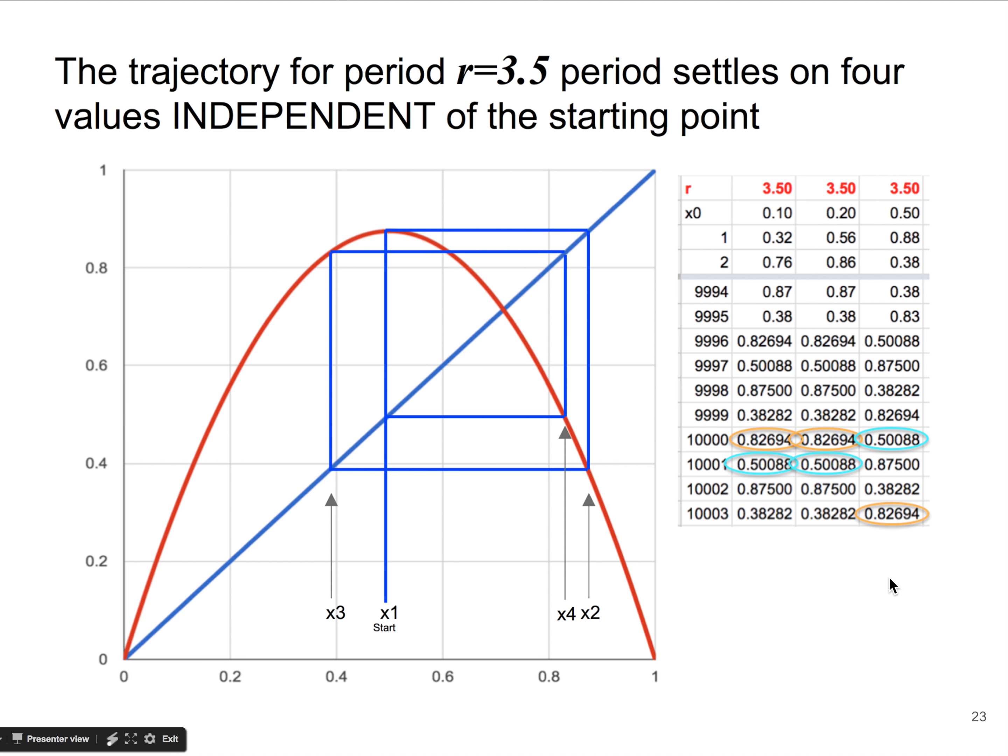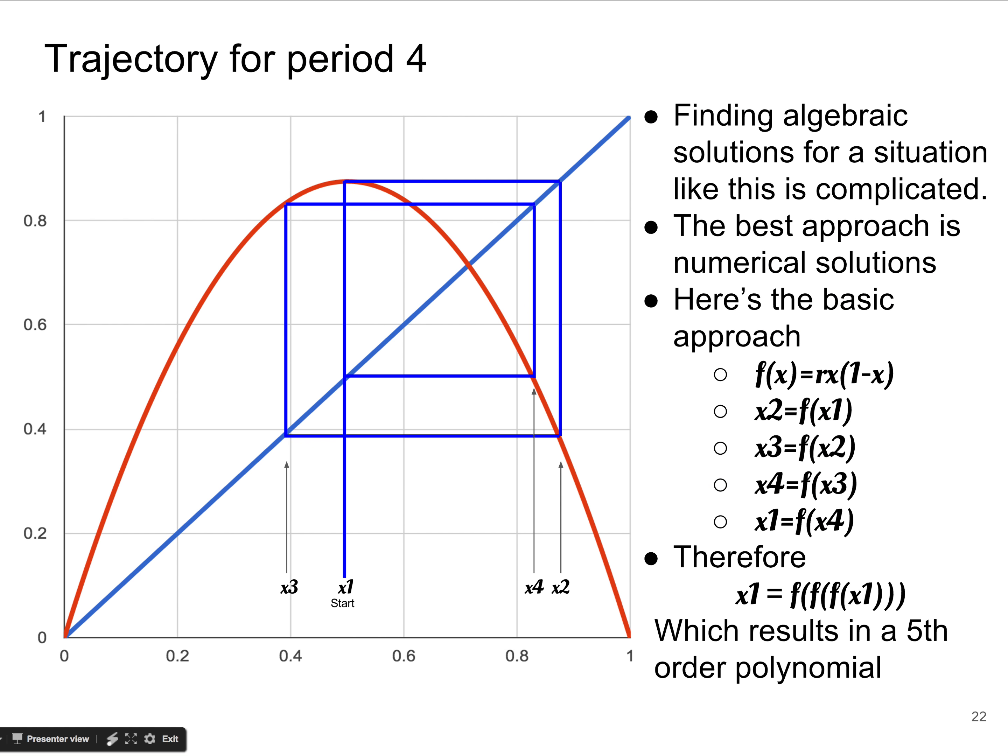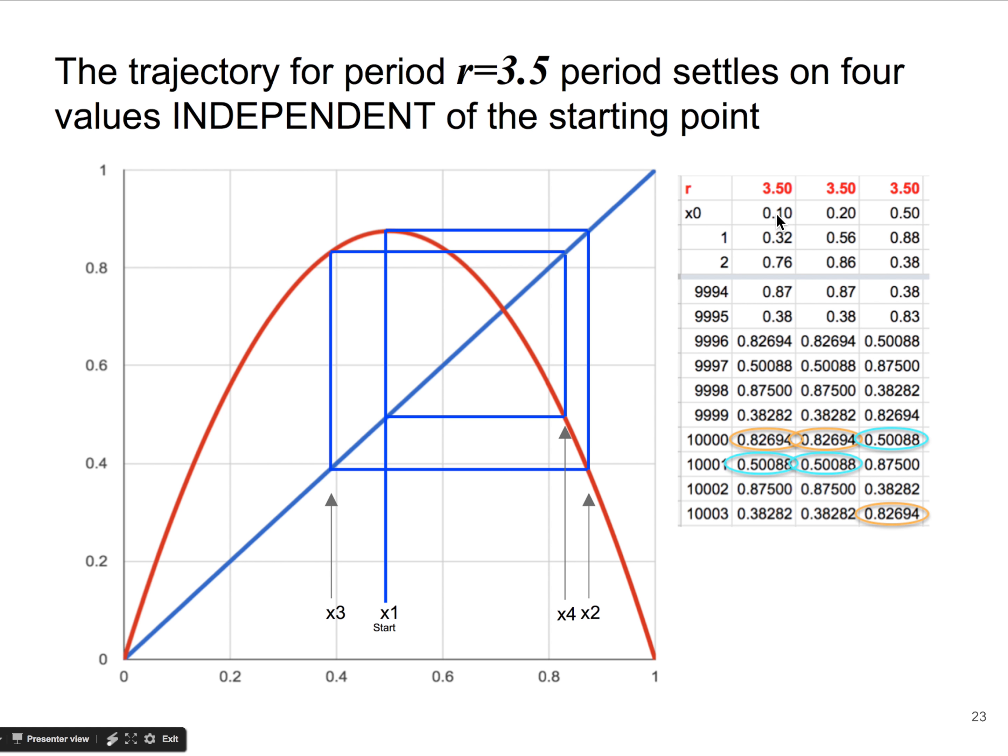So now, something interesting here has to do—the question comes up always, does the starting point matter? So here's our bifurcation diagram. Now this happens to be for r equals 3.5, and this one was for 3.5 as well. So I've started here. All the r's here are the same. Each column represents an experiment for a value of r. The starting point is different in each case, though. In one case I started at 0.1, which is way over here. The next one I started at 0.2, which is here. And the next I started in the middle, 0.5, which is the one I've drawn. And then we let the experiment run 10,000 times. And we find we oscillate between two values—0.5 and 0.82694. And you see, it didn't matter. We started with 0.1 here. We got these two values. Actually, we get four values. I apologize. We get four values: 82, 50, 87, and 38.